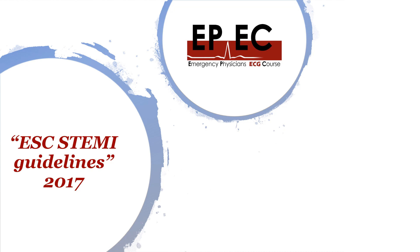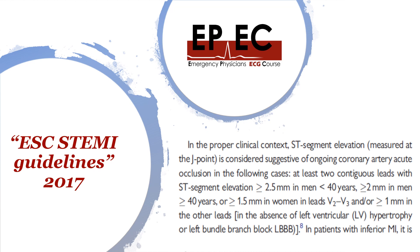How about the European Society of Cardiology guidelines? They published their guidelines in 2017. They said you need at least two contiguous leads with ST elevation: 2.5 millimeters in men less than 40, two millimeters in men over 40, and 1.5 millimeters in any woman — that is just for V2 and V3. Then one millimeter or more in any other leads. This is exactly the same definition as the American Heart Association guidelines.